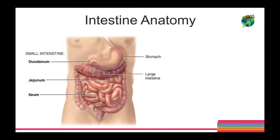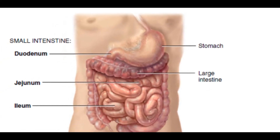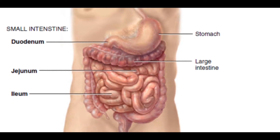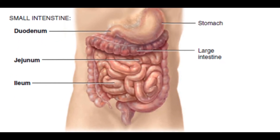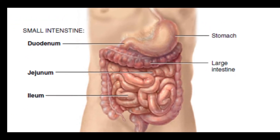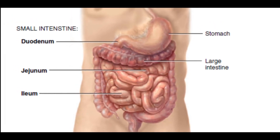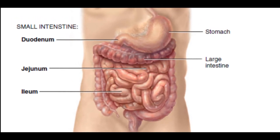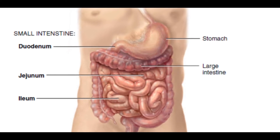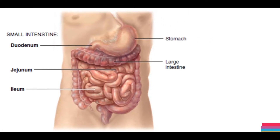The food then passes from the stomach to the small intestine, where it first reaches the duodenum, then the jejunum, and last the ileum. The food then passes through the ileocecal sphincter into the cecum, which is part of the large intestine.